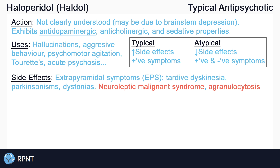Going back to the side effects of a typical antipsychotic like haloperidol, we mentioned the chance of causing extrapyramidal symptoms, or EPS. EPS are drug-induced movement disorders, including tardive dyskinesia, which is a slow onset of involuntary movements like sticking out the tongue or smacking the lips. Also parkinsonisms, which are the symptoms found in Parkinson's disease like tremors and rigidity, and other dystonias.